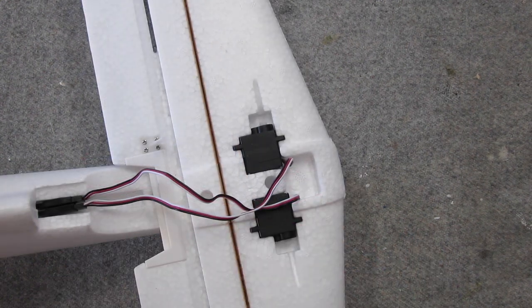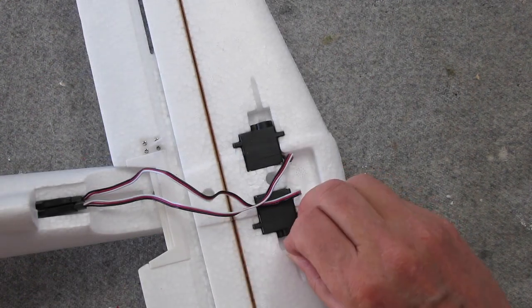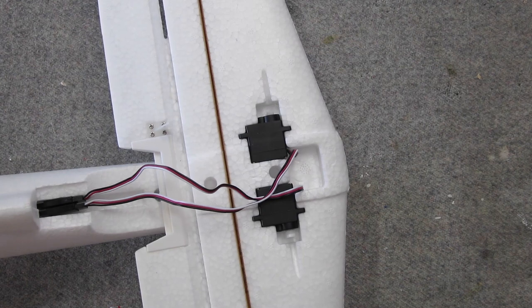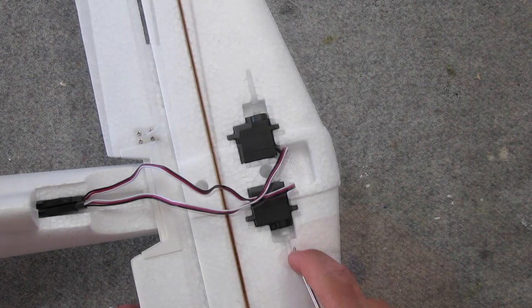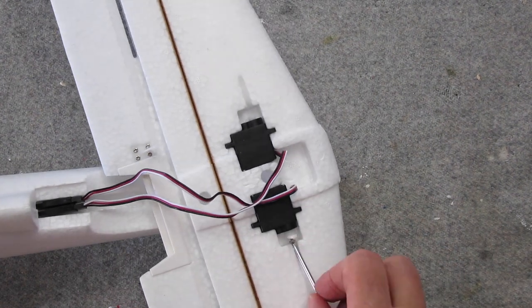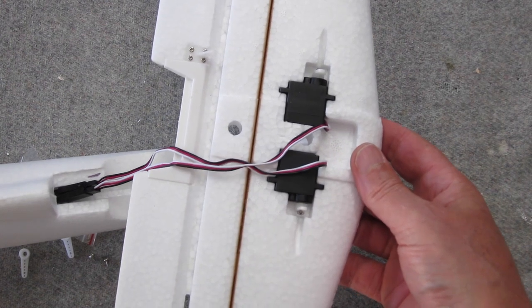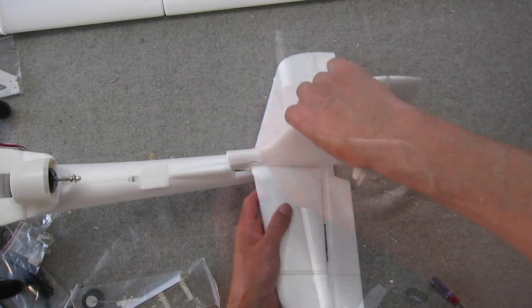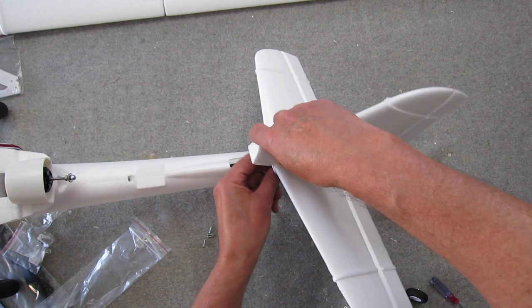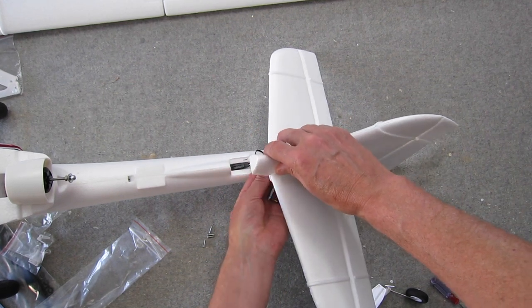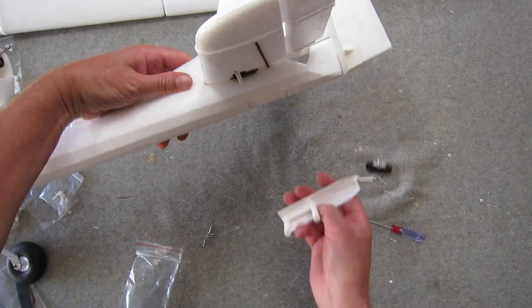Now it's time to fit the control horns to the servos for both the rudder and elevator. With the servo tester still connected, I'll make sure that they're centered up before I connect the pushrods. Now fitting the vertical and horizontal stabilizers together, and you need to tuck all those little wires into the little space provided.